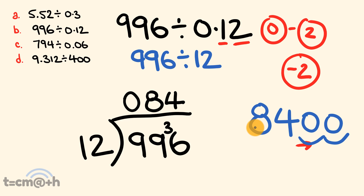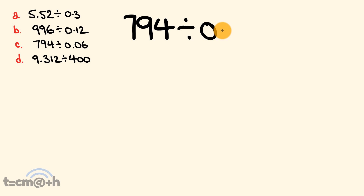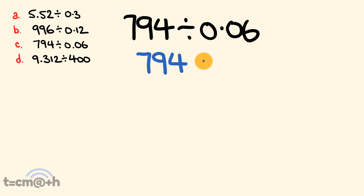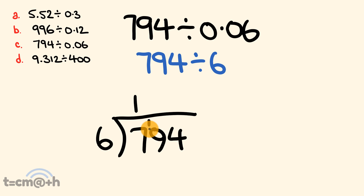For our third example we have 794 and we are dividing by 0.06. Same rules apply — we first divide like there are no decimals: 794 divided by 6. So we have 794 divided by 6. How many times does 6 go into 7? It goes in once with 1 left over. How many times does 6 go into 19? 6 threes are 18, so it goes in 3 times with 1 remainder, which we carry over.